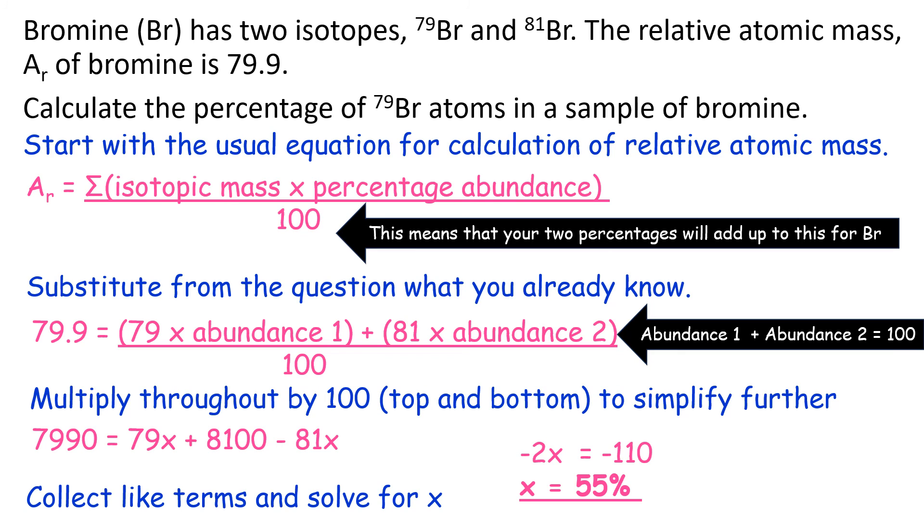So that means x is 55 percent. So x being your percentage of 79 Br atoms in a sample of bromine. In other words, this number is the percentage you're looking for up here.